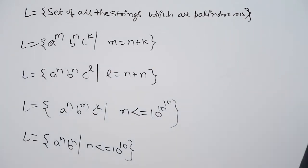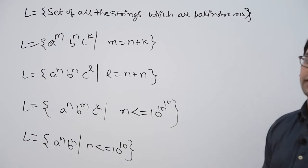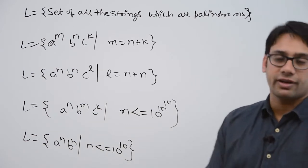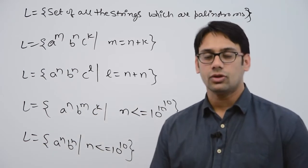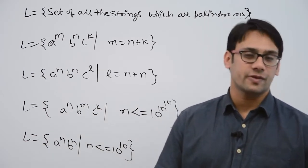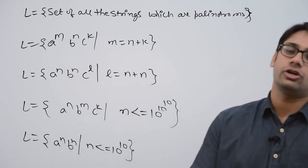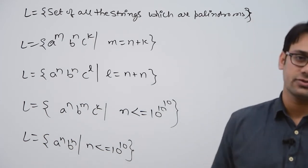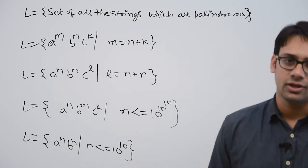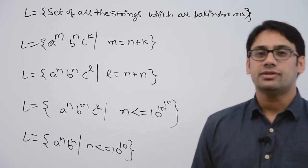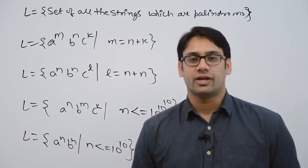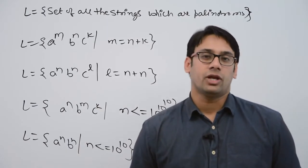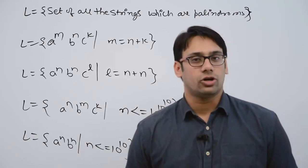I have taken these examples just to tell you that we can give finite automatas for some languages, or we can give regular expressions for some, and we cannot give regular expressions for some languages. Because maybe some languages can be regular, or maybe some languages may not be regular at all.